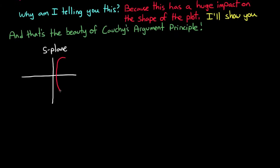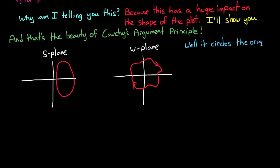So let's see, if I gave you this arbitrary contour and then told you that the mapping in the w-plane looked like this, what could you tell me about what's inside? Well, let's see, it circles the origin once in the clockwise direction, so there must be one zero inside the contour, right? Wrong.